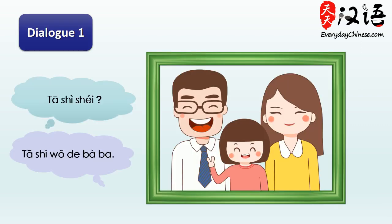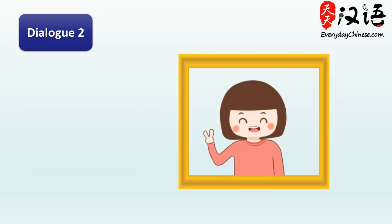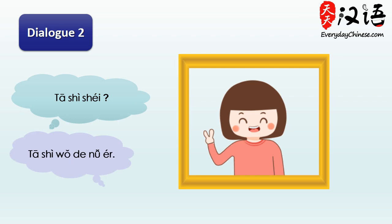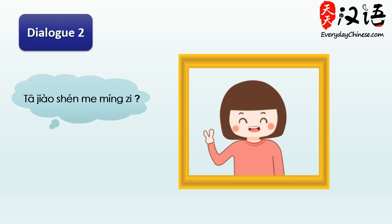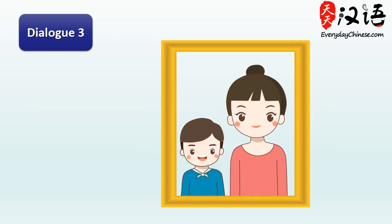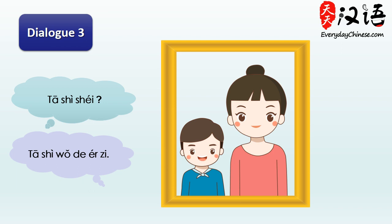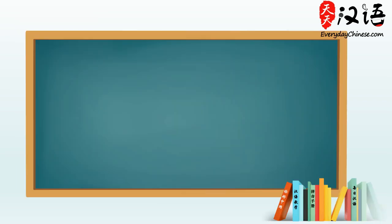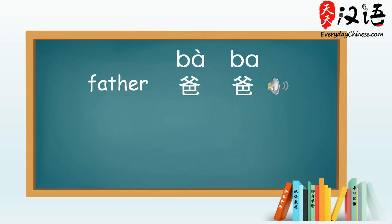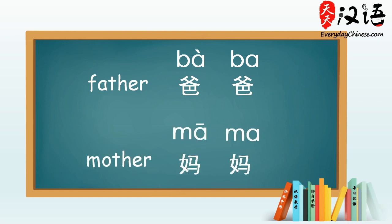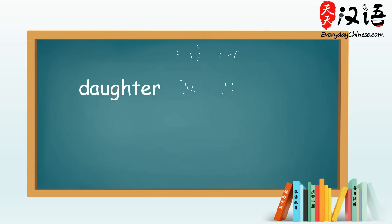她是谁? 她是我的爸爸。 她是谁? 她是我的妈妈。 她是谁? 她是我的女儿。 她叫什么名字? 她叫露露。 她是谁? 她是我的老婆。 她是谁? 她是我的儿子。